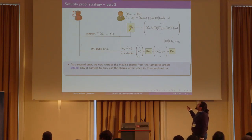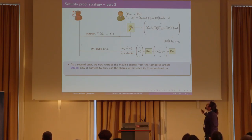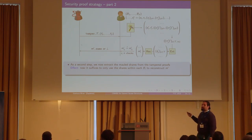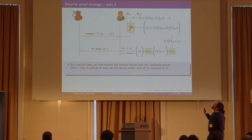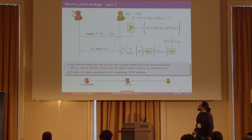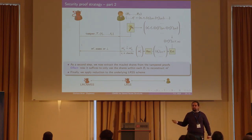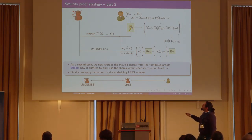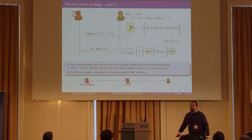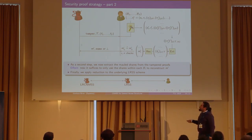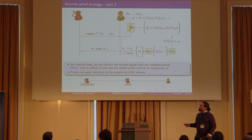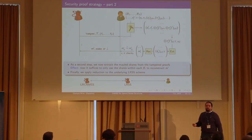By doing so, we no longer need all shares to compute the tampering — we only need all the shares in one of the subsets. Finally, we apply a reduction to the underlying secret sharing scheme, simulate the adversary in the leakage oracle, use the leakage oracle to obtain the first self-destruct index, and check that we didn't leak too much. This concludes the proof.